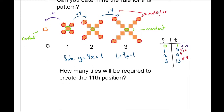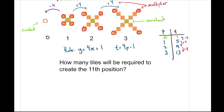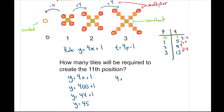So again, different ways we can visualize it. If you don't like visualizing it, you can always put it into a table and use that input-output idea to figure it out. Using this rule, how many tiles will be required to create the 11th position? Regardless of which formula we use, we're going to multiply the position number by four. So mathematically: four times 11 plus one equals 44 plus one. If you had to do it in steps: four times 11 equals 44, and 44 plus one equals 45.